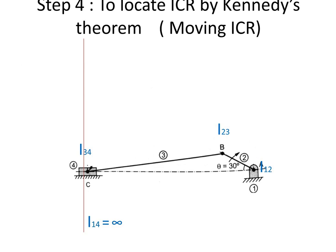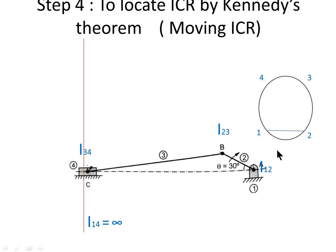The next step is to locate moving ICRs using Kennedy's theorem. Draw a circle of any radius and mark points on the circumference equal to the number of links — so 4 points labeled 1, 2, 3, and 4. Now join the pairs for which we have already located ICRs: join 1-2 for I12, join 2-3 for I23, join 3-4 for I34, and join 1-4 for I14.